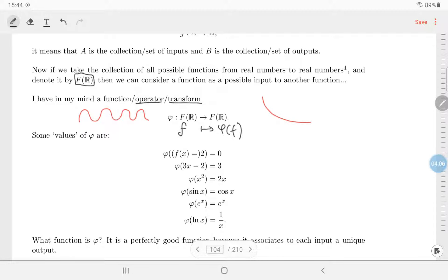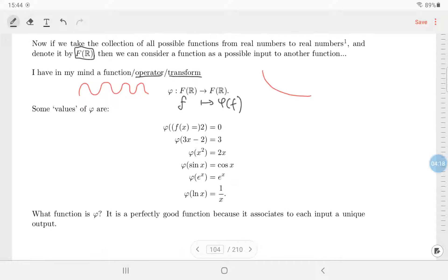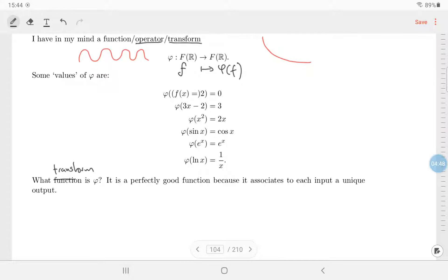We call a transform, which is a nice word, and it kind of sounds nice with signal processing as well. You transform the signal. Here I have some values of this thing. So what transform is this? This is the transform or operator that takes in a constant function 2 and spits out zero, takes in the function 3x minus 2 and spits out 3, takes in a function x squared and spits out 2x, takes in a function sine x, spits out cosine x, and so on and so forth.